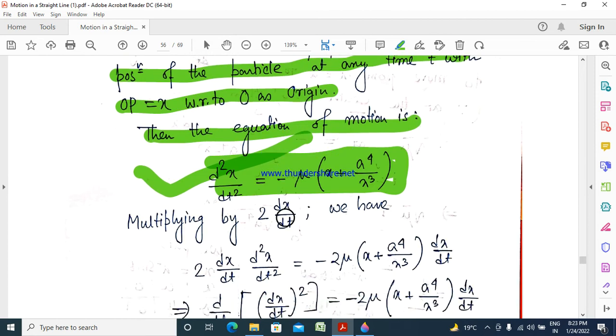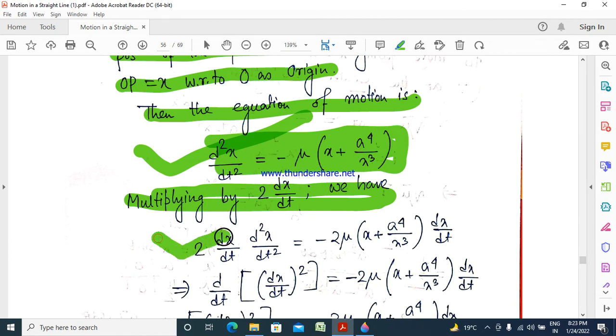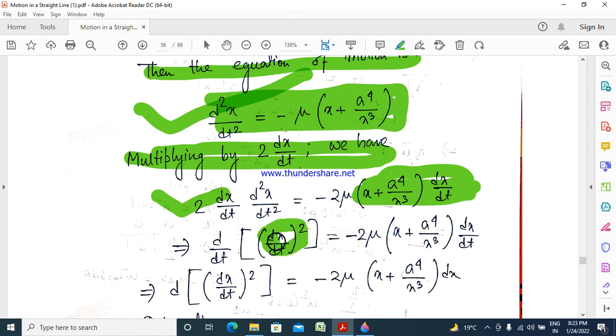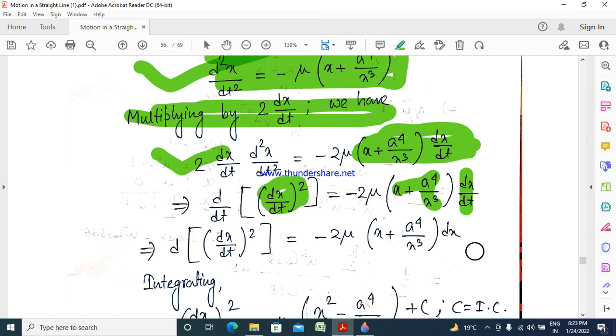Multiply both sides by 2 dx dt. So we get 2 dx dt d2x dt2 equals minus 2 mu x plus a to the power 4 by x cubed dx dt. That is d dt of dx dt squared equals minus 2 mu a to the power 4 by x cubed dx dt. Both sides dt cancel. In differential form, differential of dx dt squared equals minus 2 mu x plus a to the power 4 by x cubed dx.